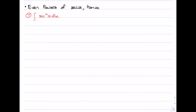In this video we'll be looking at integrating even powers of sec x and tan x. When we were looking at integrating powers of sine and cos, we made use of the Pythagorean identity sin²θ + cos²θ = 1. When we look at even powers of sec and tan, we'll use something similar that derives from the Pythagorean identity: 1 + tan²x = sec²x. This identity is going to become very helpful when we do these integrals.